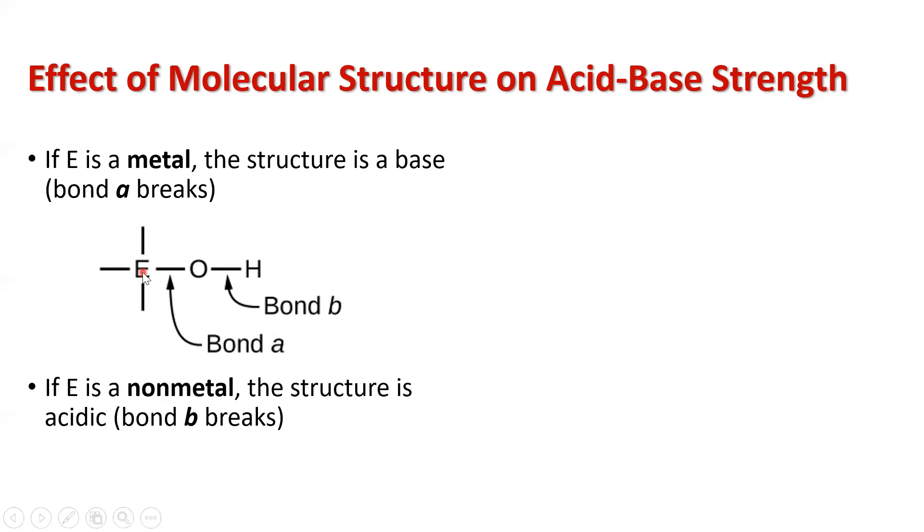But if E is a non-metal, something on the right side of the periodic table, then bond B here breaks, and we're looking at a structure that's an acid.